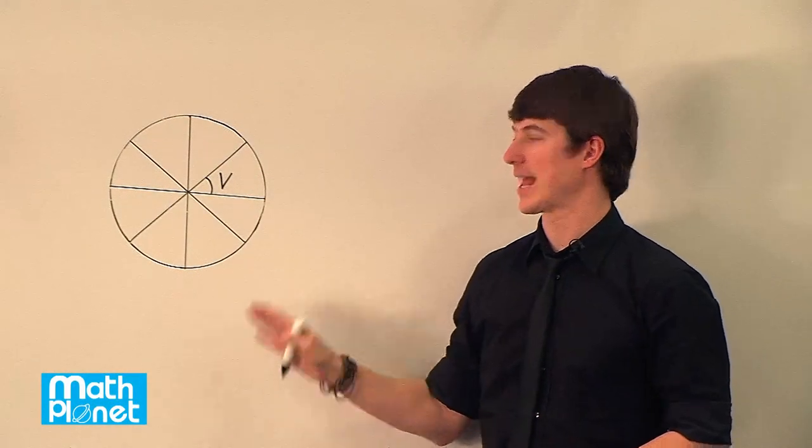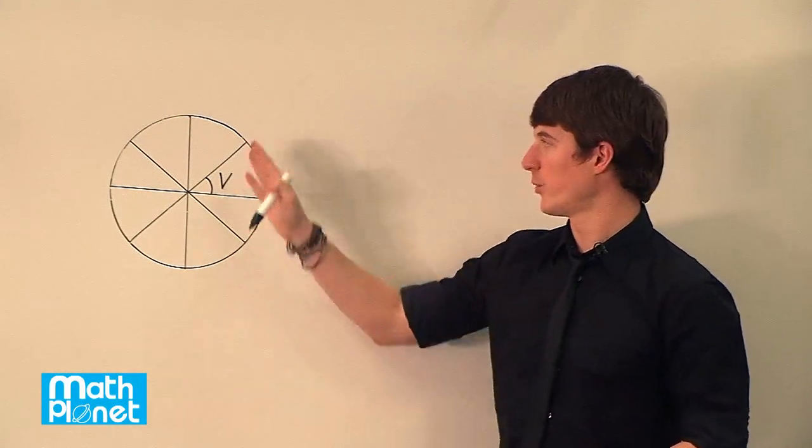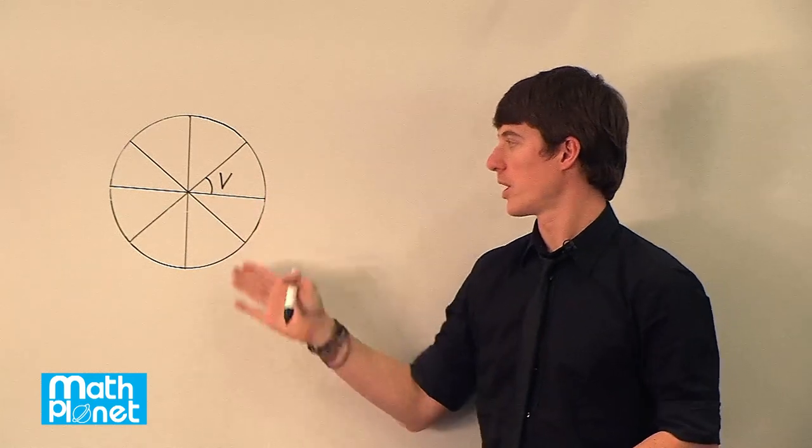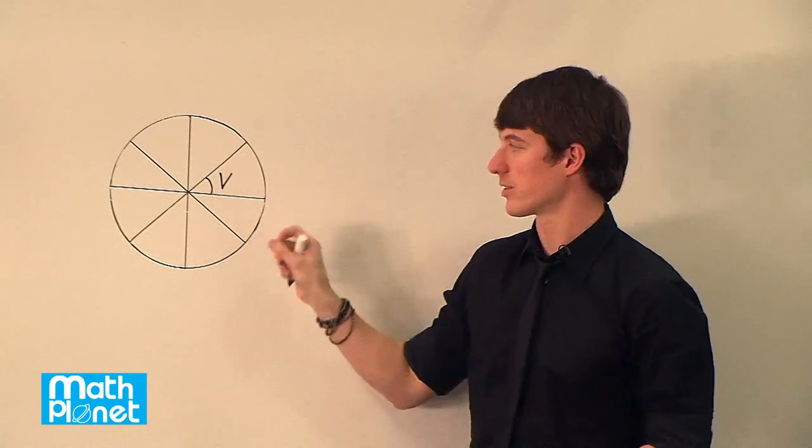Here we have a perfect circle that's divided into eight equal parts. So if we divide a circle into different parts that are equal, we can talk about what one arc angle is here.